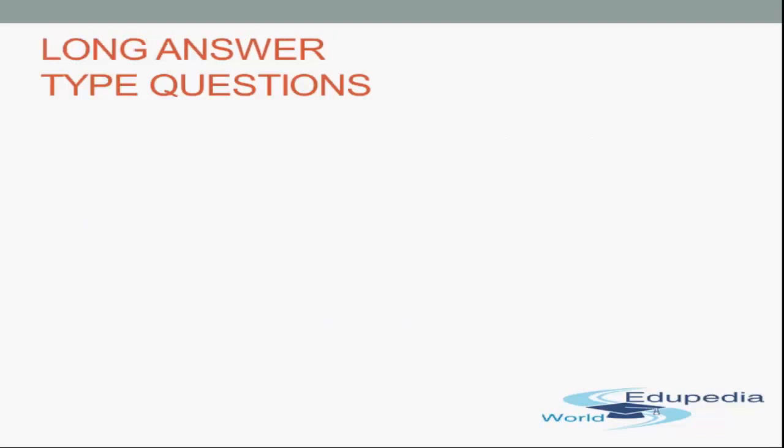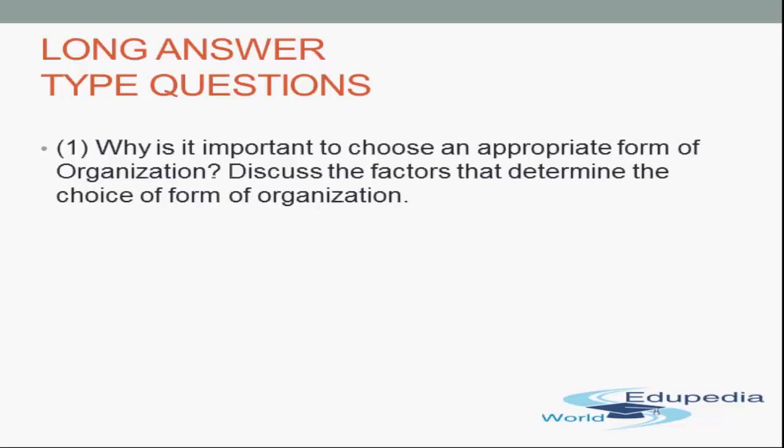The next category is long answer type questions. The first example is: why is it important to choose an appropriate form of organization? And: discuss the factors that determine the choice of form of organization. You have to write that there are various forms of organization and each has its own merits and limitations. The survival and growth of a business mainly depends on the selection of a suitable form of organization. For the factors, you need to give all factors such as nature of activity, area where the business needs to be started, financial resources, etc., and explain each with at least two or three sentences.